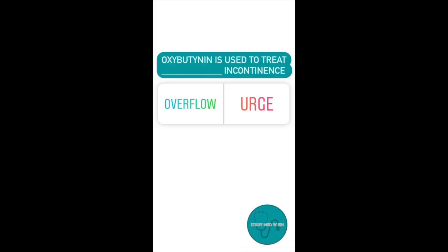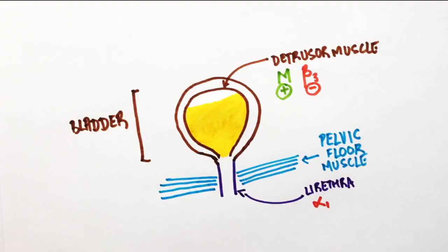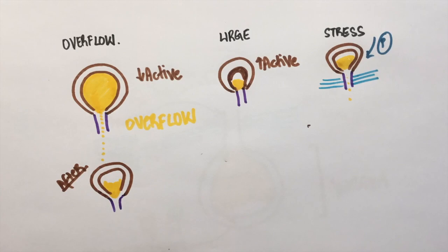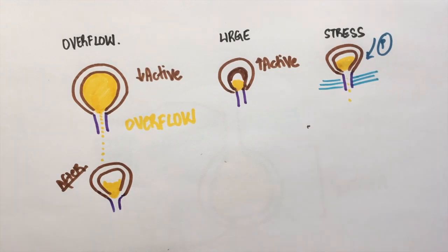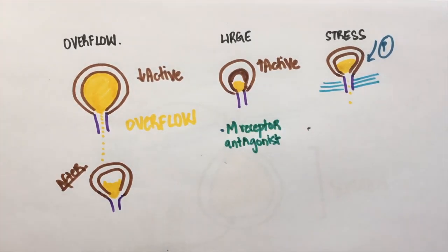Question number two: Oxybutynin is used to treat overflow incontinence or urge incontinence. Oxybutynin is an M-receptor antagonist. M-receptors are involved in contracting the bladder. We know that patients with urge incontinence have an overactive bladder. So in order to reduce the contraction, we use M-receptor antagonists for urge incontinence.